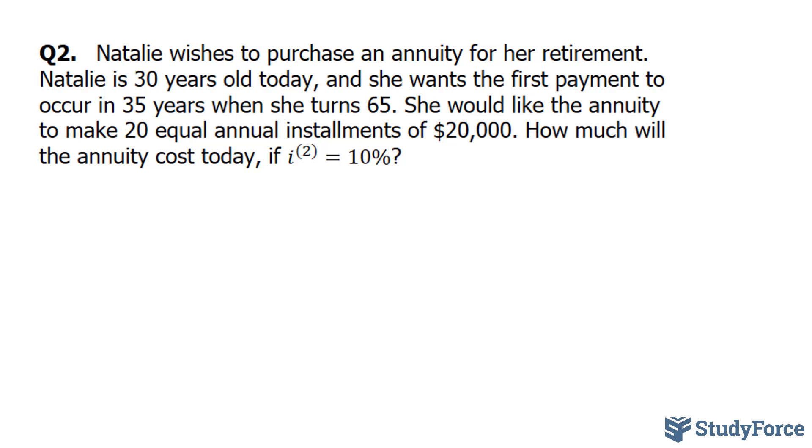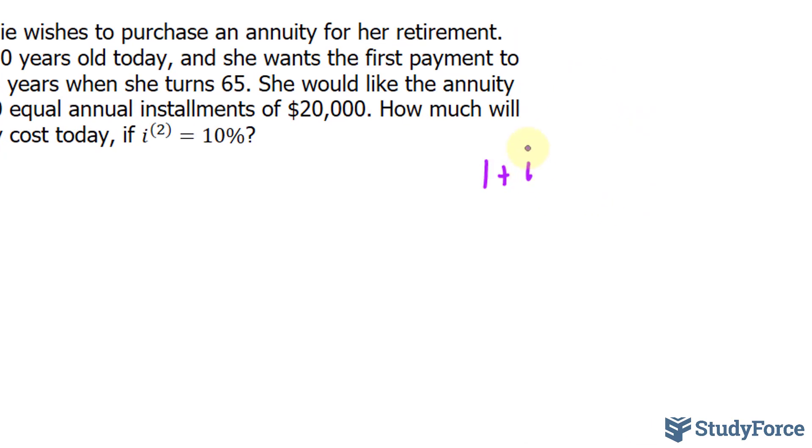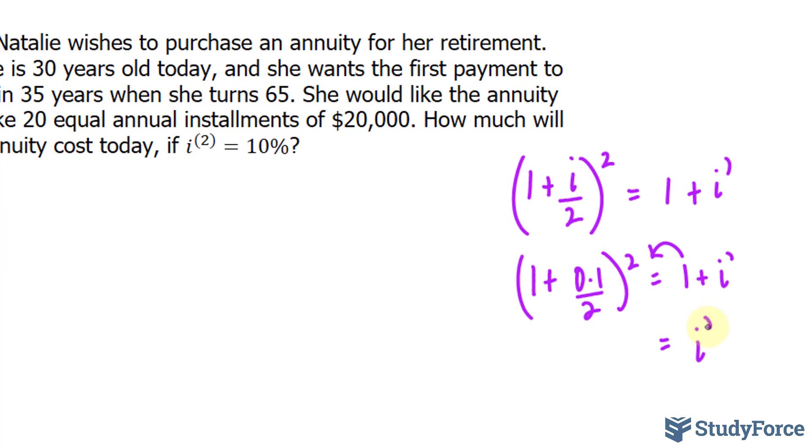And for that we'll use this formula where I have 1 plus i, and in our case here it's divided by 2 because it's compounded semi-annually and that's being raised to the power of 2. I'll replace i with 0.1 shortly. And that is equal to 1 plus i prime. That's the interest rate that we're looking for and it matches the cash flow. This is also called the effective annual rate.